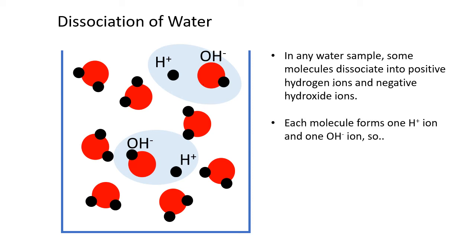If you think about it, you can see that when that happens, each water molecule produces one hydrogen ion and one hydroxide ion. So what that means is that in any given sample of water, at any moment in time, there will be equal numbers of hydrogen ions and hydroxide ions. That might sound obvious, but it's important to understand acids and bases later on.